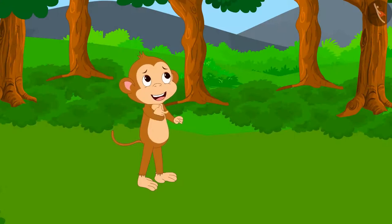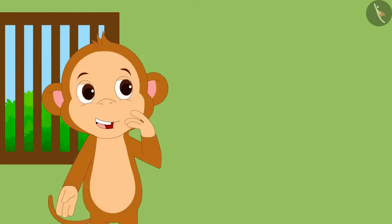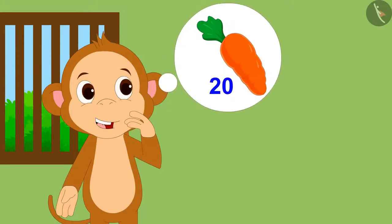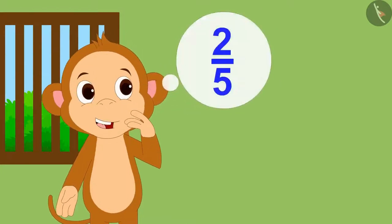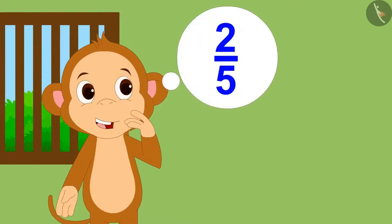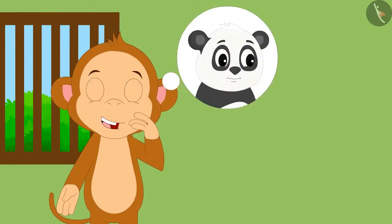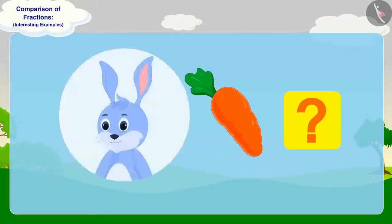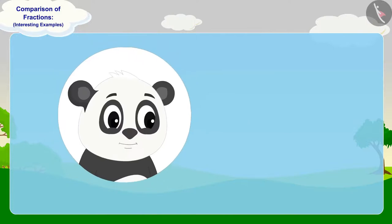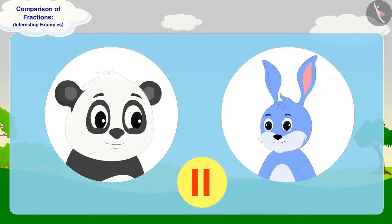Babban returned home happily thinking of this. Now he is thinking that he will grow 20 carrots in his field. When those carrots are grown, he will give two-fifth part of them to Bunni and half to Golu. Children, can you tell how many carrots Bunni will get? Is that more than the number of carrots Golu gets? You can stop the video and find the answer.